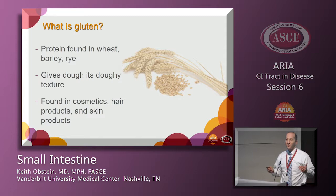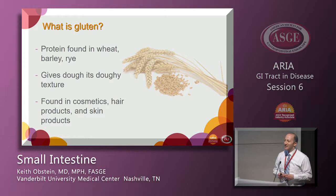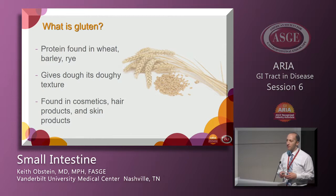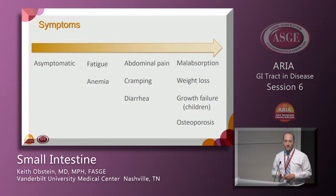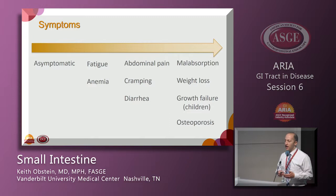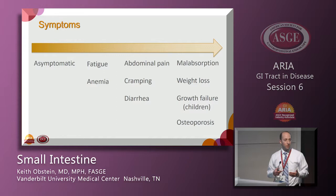Gluten is a protein found in wheat, rye, and barley — basically all the stuff that makes donuts doughy. It can also be found in cosmetics, skin products, and some detergents. Patients trying to avoid gluten may be unintentionally exposing themselves through these non-food sources. The spectrum of sensitivity ranges from asymptomatic individuals all the way to malabsorption and growth failure.